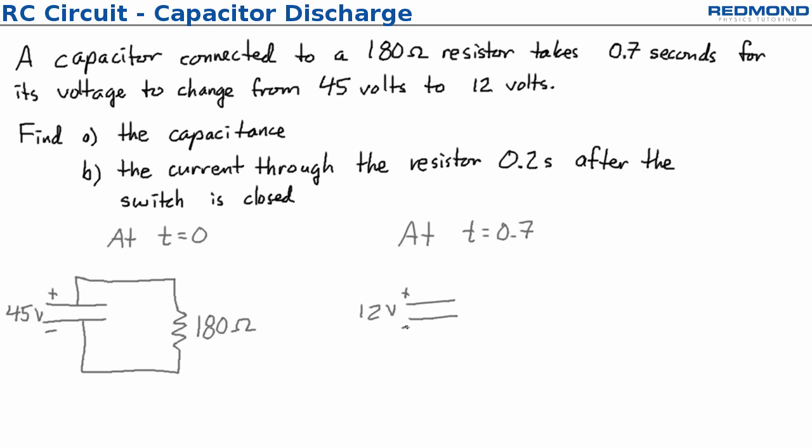So I can draw this circuit again and I can say at t equals 0.7 seconds and then redraw it with the capacitor having 12 volts. I know the capacitor is discharging because the voltage across the capacitor later on at 0.7 seconds is less, it's 12 volts and that's less than the initial voltage.